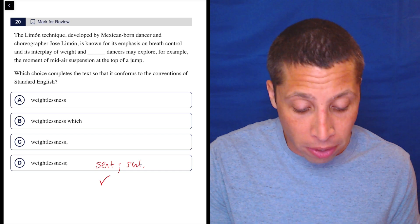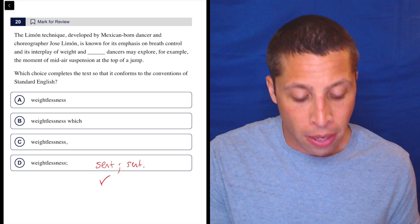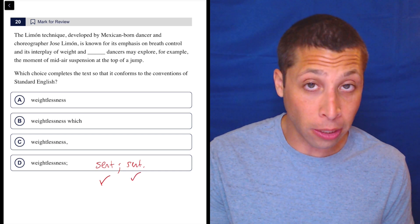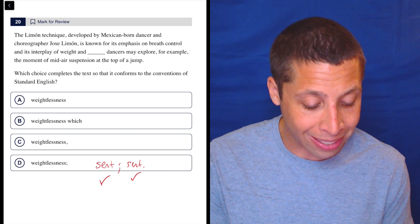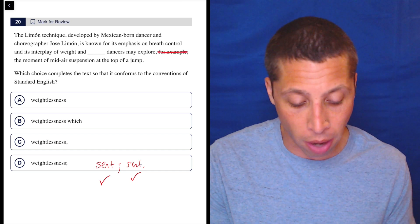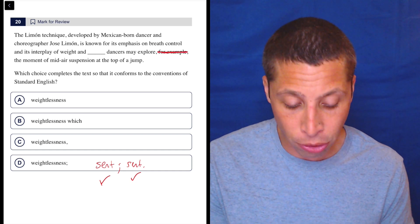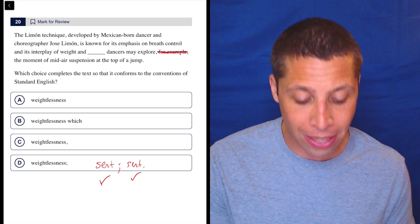Dancers may explore, for example, the moment of midair suspension at the top of a jump. So that is also a sentence. Some of you might have a little trouble hearing it, but that's because the word 'for example' is getting in the way. Let's kill that off. That's just an extra clause.